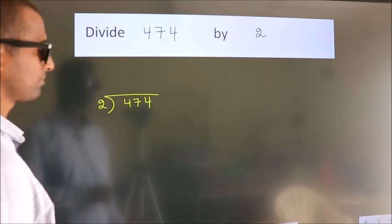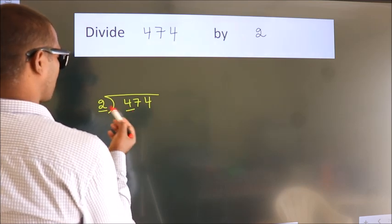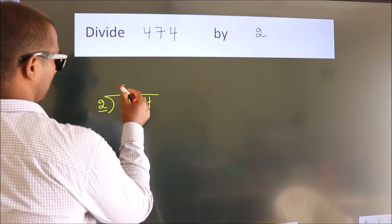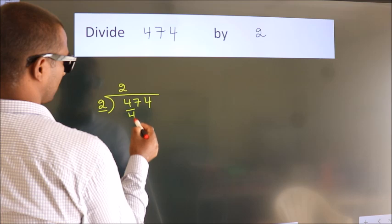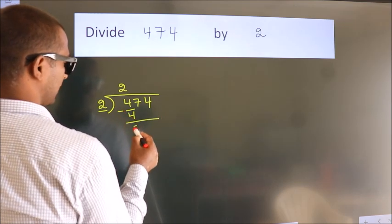Next, here we have 4, here 2. When do we get 4? In 2 table, 2 2s, 4. Now we should subtract. We get 0.